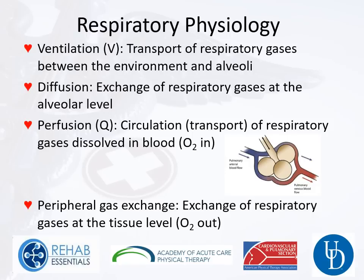That oxygenated blood goes out to the tissues of our body, allowing peripheral gas exchange — oxygen going to the tissues and CO2 coming from the tissues as part of aerobic metabolism.